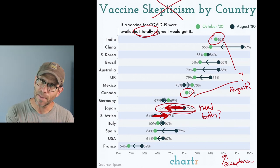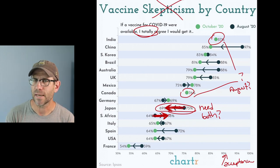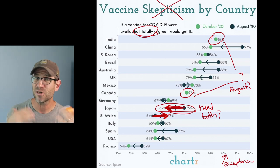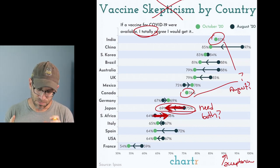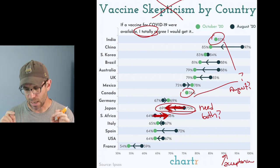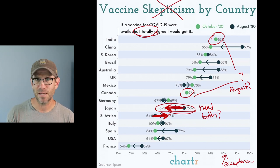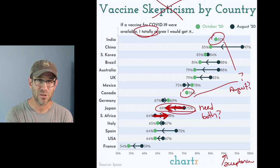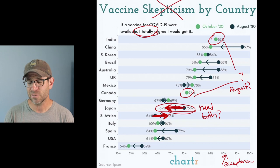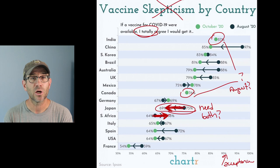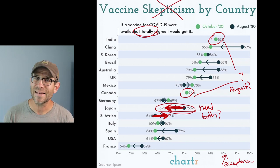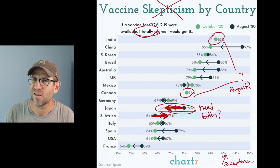Another problem with showing only one of the two numbers — remember the Ipsos version had both August and October numbers — is that I start wondering whether there were August data at all. With the Ipsos version, for India they had 87 on both sides of the point. I think you probably need both numbers to make it clear you're not missing data. If you pick high-contrast colors, that might better show the flow of time than what we saw with Ipsos. The arrows could work as an alternative in a case where all countries show a difference between August and October.